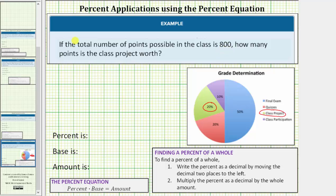So to answer the question, we need to determine what is 20% of 800. And we'll show how to do this two ways.